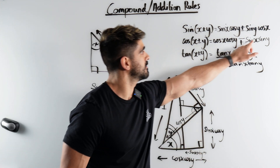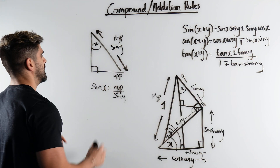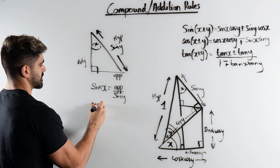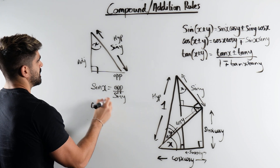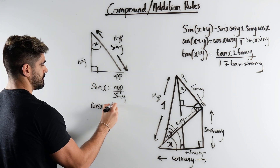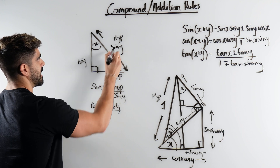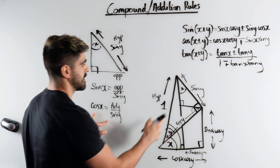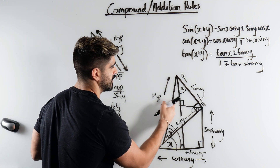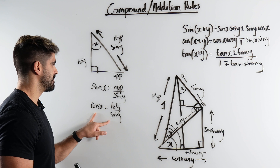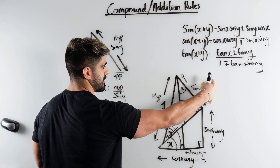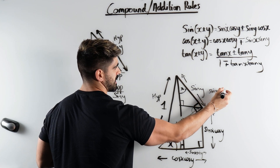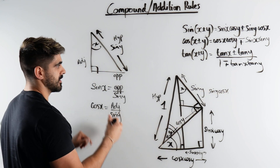Now you can see the result. This is the adjacent, so for that we're going to use cos. Cos of x is the adjacent divided by the hypotenuse which is sine y. Multiply them together and that length is cos x sin y. I've just multiplied those together.